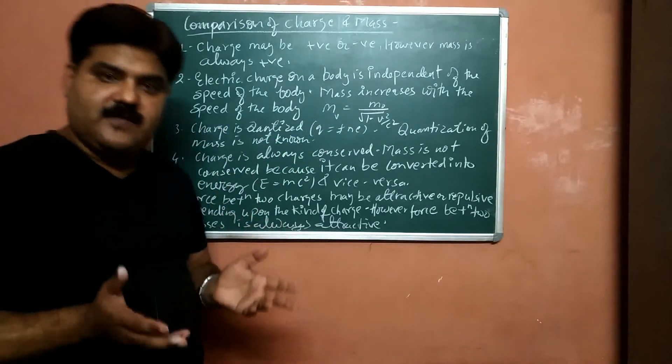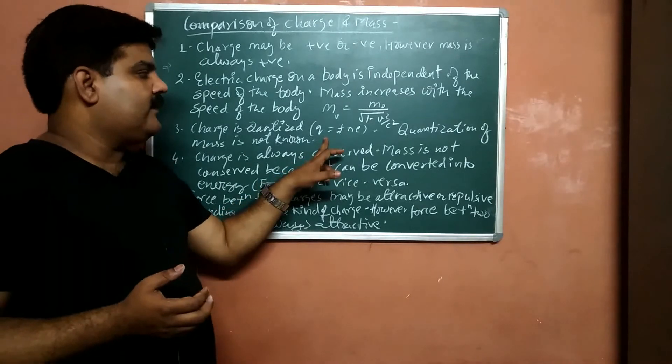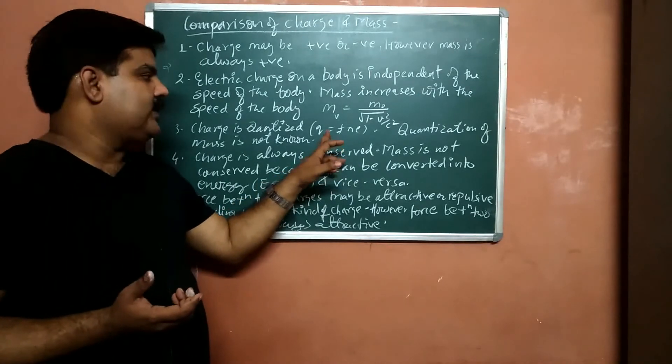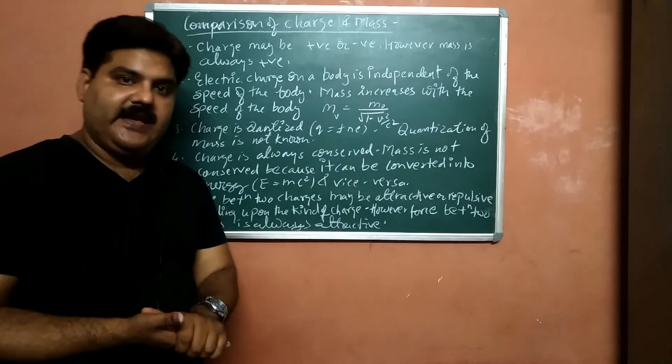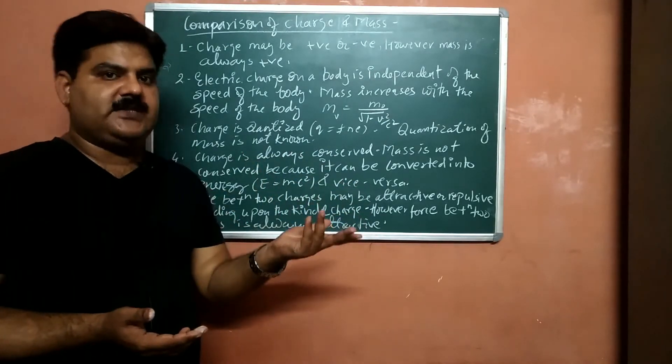Third one is, charge is always quantized. As in my previous lecture, I have told you that from the quantization of the charges, q equal to plus minus ne. A body can have plus e charge, plus 2e charge, plus 3e charge.